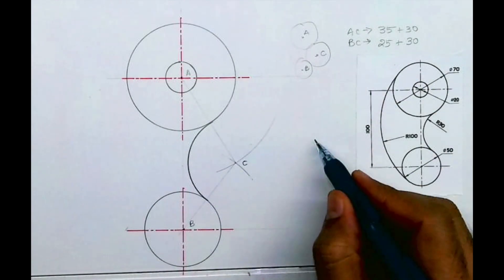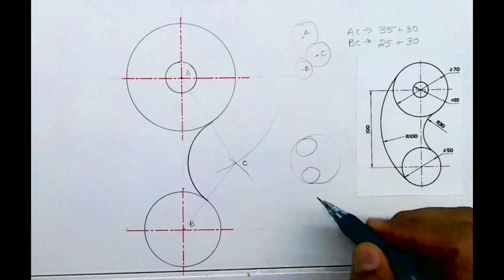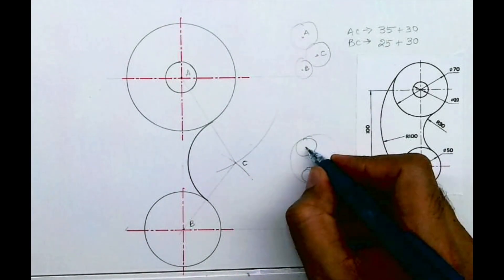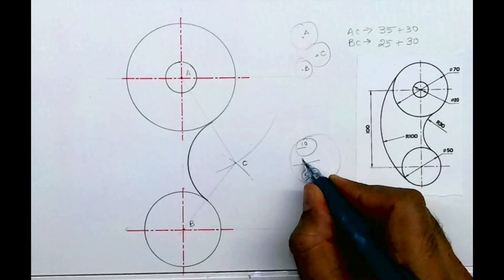Now I want to draw this radius 100. This is the bigger radius, 100, and 35 and 25 are small radius, so it will look like this. Let's take this radius as 10, this is 5, and this is 20.